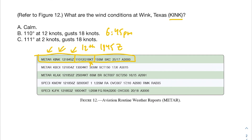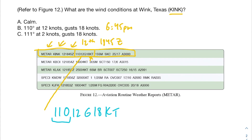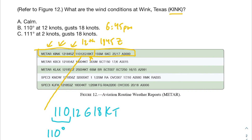One helpful tip: the wind section will always end with KT for knots, so you don't need to memorize the exact order — just identify that this section is talking about wind. The first part is the direction of the wind in degrees: 110 degrees. The next part is the wind speed: 12 knots. The part after that addresses gusts — since we see the G, the gusts are 18 knots. That's everything we need; the rest of the METAR doesn't relate to wind conditions.